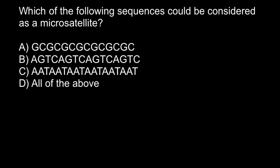If we take a look at answer A, we have a repeat of two bases, G and C — one repeat, second, third, fourth, fifth, sixth, and seventh. So we have seven repeats of GC in this sequence.